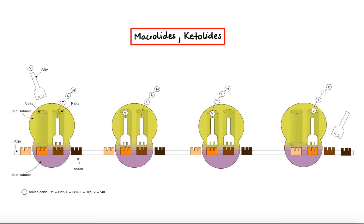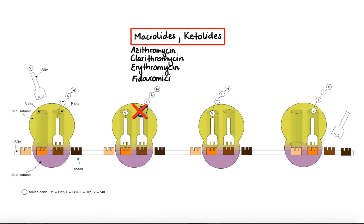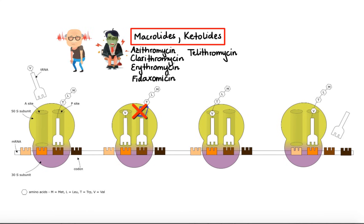Now let's move on to macrolides and their close relatives, ketolides. Macrolides and ketolides appear to bind primarily to the 50S ribosomal subunit near the peptidyl transferase center, where they block the peptide exit tunnel that newly assembled polypeptides pass through on their way out of the ribosome. This results in inhibition of the protein elongation process and thus bacteriostatic activity against most organisms. Examples of macrolide antibiotics include azithromycin, clarithromycin, erythromycin, and fidaxomycin. The ketolide antibiotic example is telithromycin. The most common side effects include nausea, vomiting, diarrhea, and ringing or buzzing in the ears. Less common but more serious side effects include QT interval prolongation leading to ventricular arrhythmia torsades de pointes, and cholestatic hepatitis associated primarily with erythromycin.